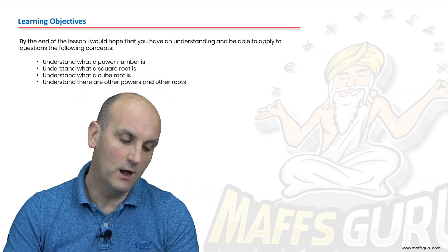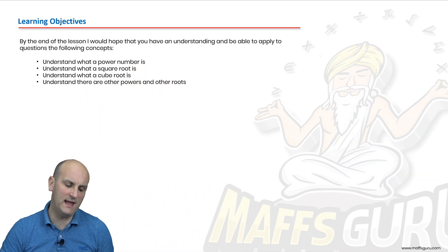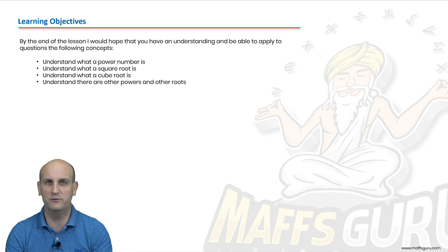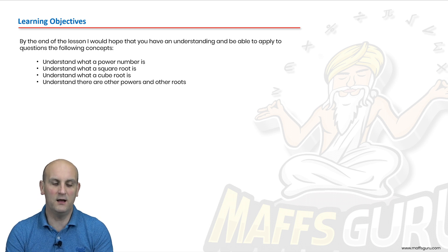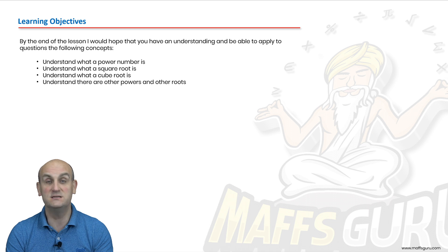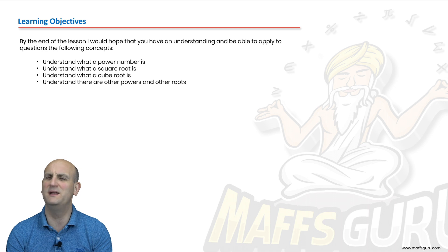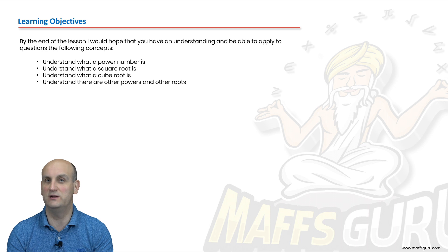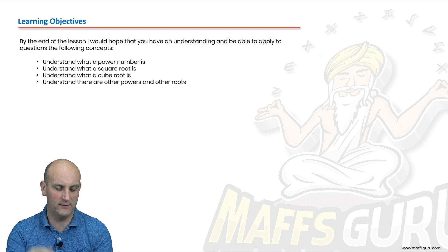Learning objectives: what is a power number, what is a square root, what is a cube root, and what are roots in general. Very embarrassing story — when I worked in a hotel once, somebody asked me for directions and I said 'oh, you want a root.' I hadn't quite realized in Australia how embarrassing that really was. Many other embarrassing stories of my time in hotels — all on mathguru.com, funnily enough.